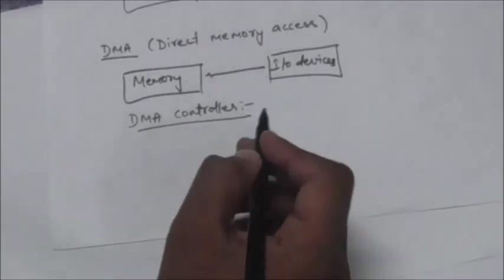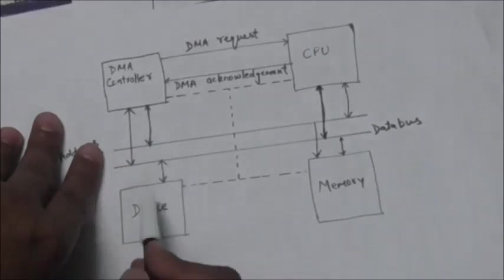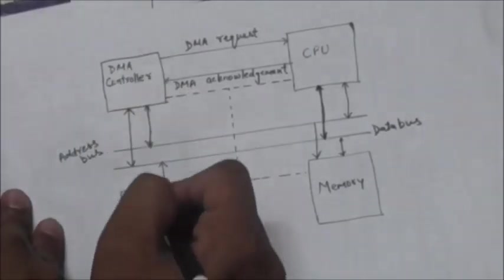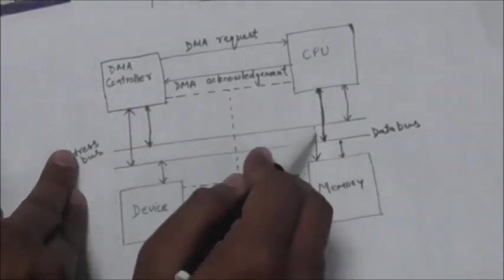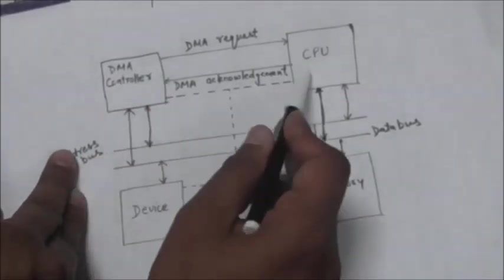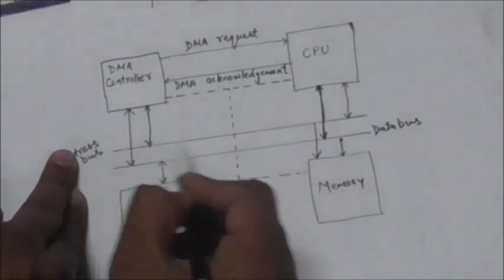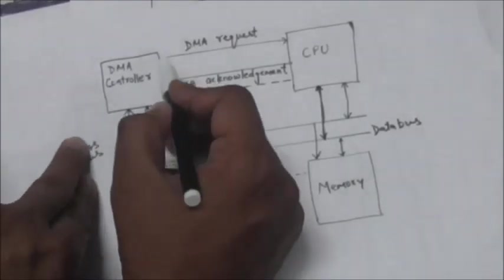Whenever the data transfer is needed to or from memory, some event notifies the DMA controller. Both the DMA controller and CPU use memory bus. Only one of them can use the memory at the same time. So DMA controller sends a request to CPU to use the memory bus.